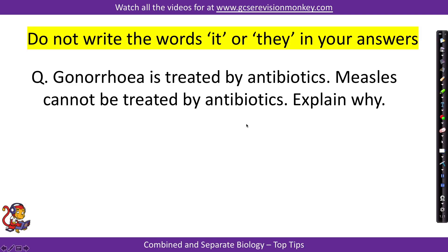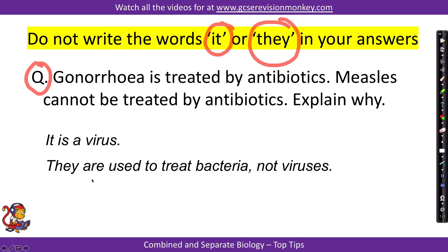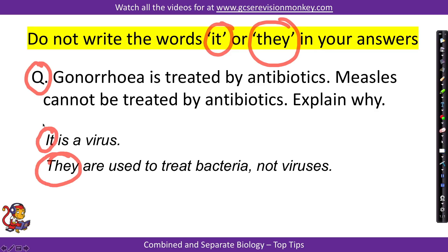Tip number three. Do not write the words 'it' or 'they' in the exam — if you do, you've probably missed a keyword and will not get the mark. For example, if the question asks why measles cannot be treated by antibiotics, don't write 'it is a virus and they are used to treat bacteria.' Instead, write 'measles is a virus' and 'antibiotics are used to treat bacteria, not viruses.' A simple correction that makes sure you get the marks.